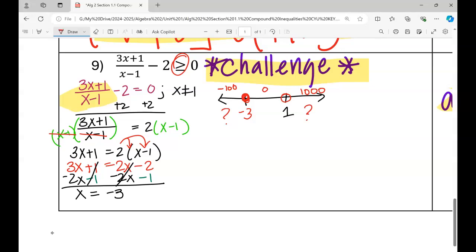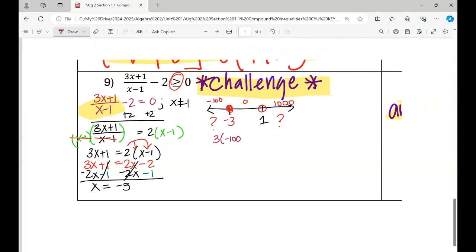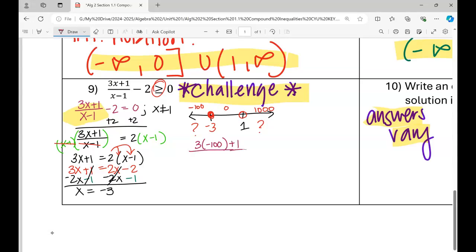Then our job is to see which region, which set of solutions we can keep. When we can keep, that means would it make it true? So I'm going to plug in negative 100 to the original, 3 times negative 100 plus 1, divided by negative 100 minus 1 minus 2, true or false, bigger than or equal to 0?